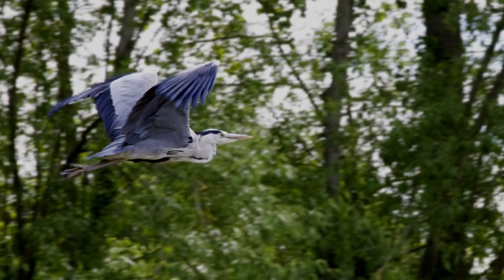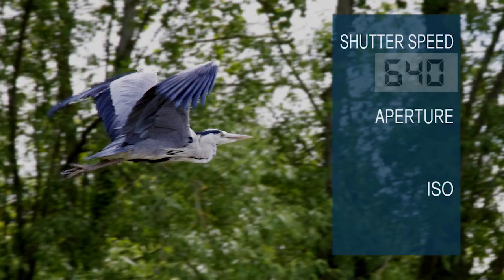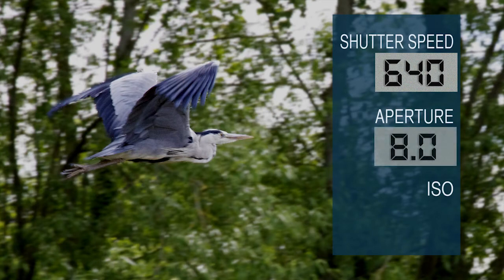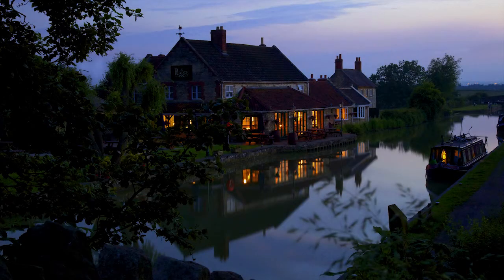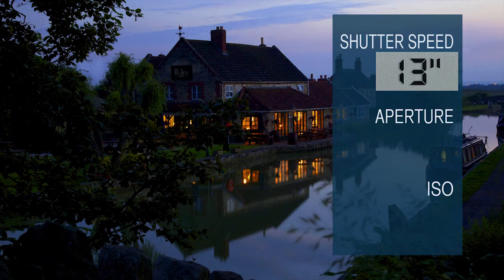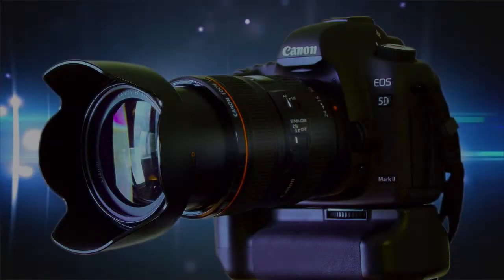Let's go back to a few original shots. The shot of the heron and how all the settings together created the final image: the shutter speed was 640, aperture f8 and the ISO 1250. Again with this night shot: a shutter speed of thirteen seconds with an aperture of f22 and the ISO was set at 400. You can now see how these three individual settings combine to give you the perfect balanced exposure.